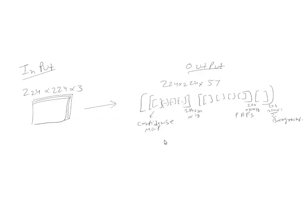Given an input of 224×224×3, we apply VGG to extract features, then pass those features into the two branches. At the end, we get a 224×224×57 output tensor. The first 18 channels give the confidence maps, the next 38 channels give the Part Affinity Fields which encode directions, and the last channel gives the background.